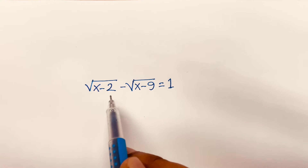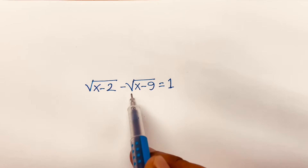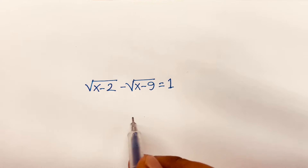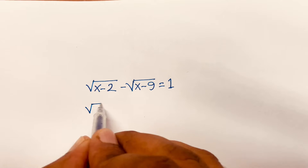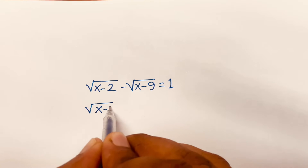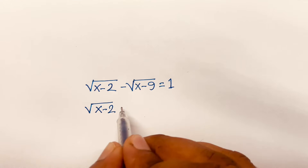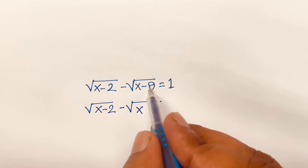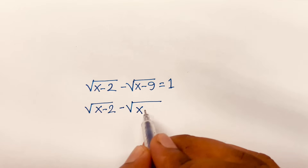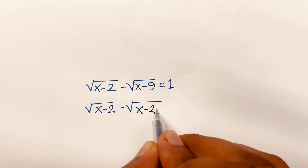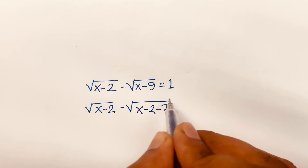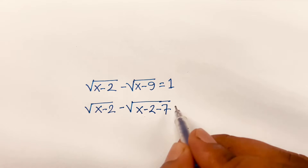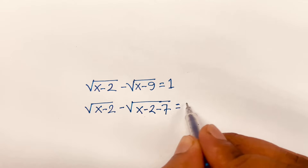How to solve square root of (x minus 2) minus square root of (x minus 9) equals 1. We can rewrite x minus 9 as x minus 2 minus 7, since minus 2 minus 7 is minus 9. So the equation becomes square root of (x minus 2) minus square root of (x minus 2 minus 7) equals 1.